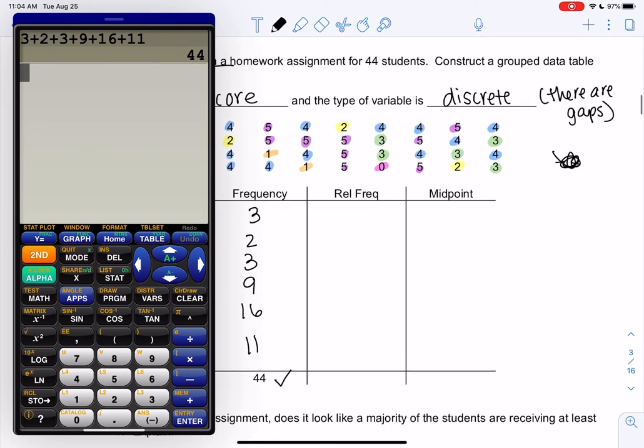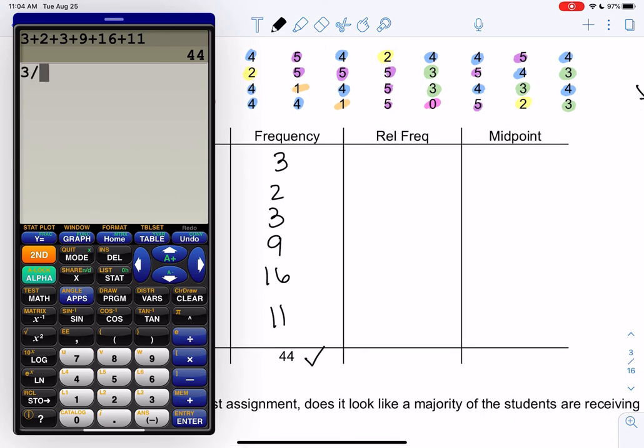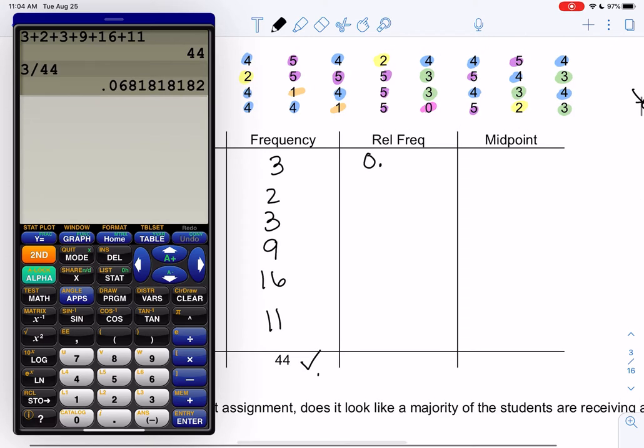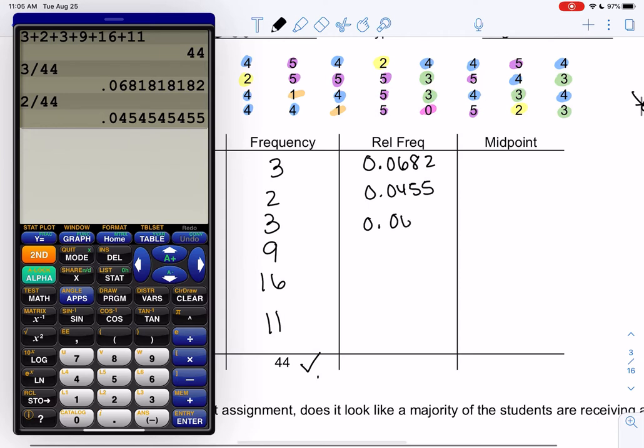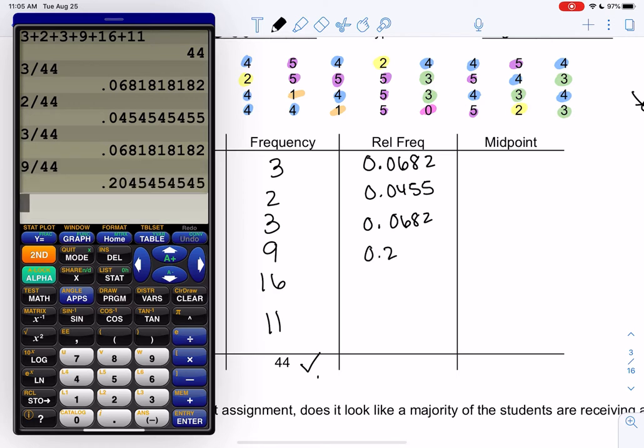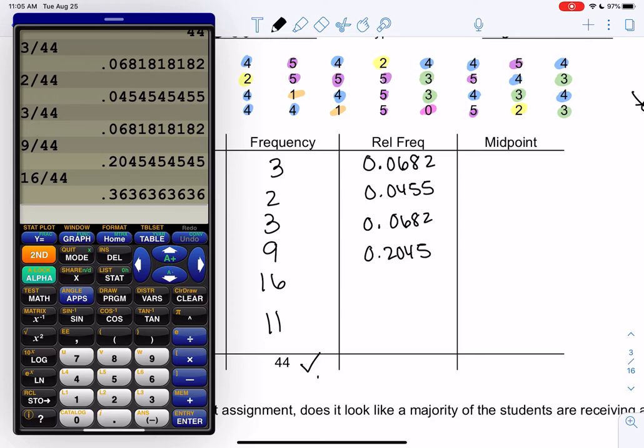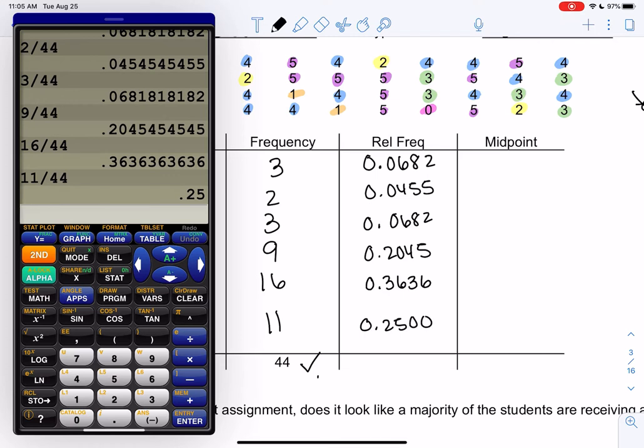Relative frequency, we're going to go ahead and do frequency divided by total. So 3 divided by 44. 0.0682, and then I'll go up to 2 because the 8 tells me to round up. 2 divided by 44, we get 0.0455. We're going to round up to 5 because the number to the right tells me to go up. This is going to be the same, 0.0682. 3 over 44 is the same number. 9 out of 44, we get 0.2045. It'll stay at 5 because there's a 4 to the right.